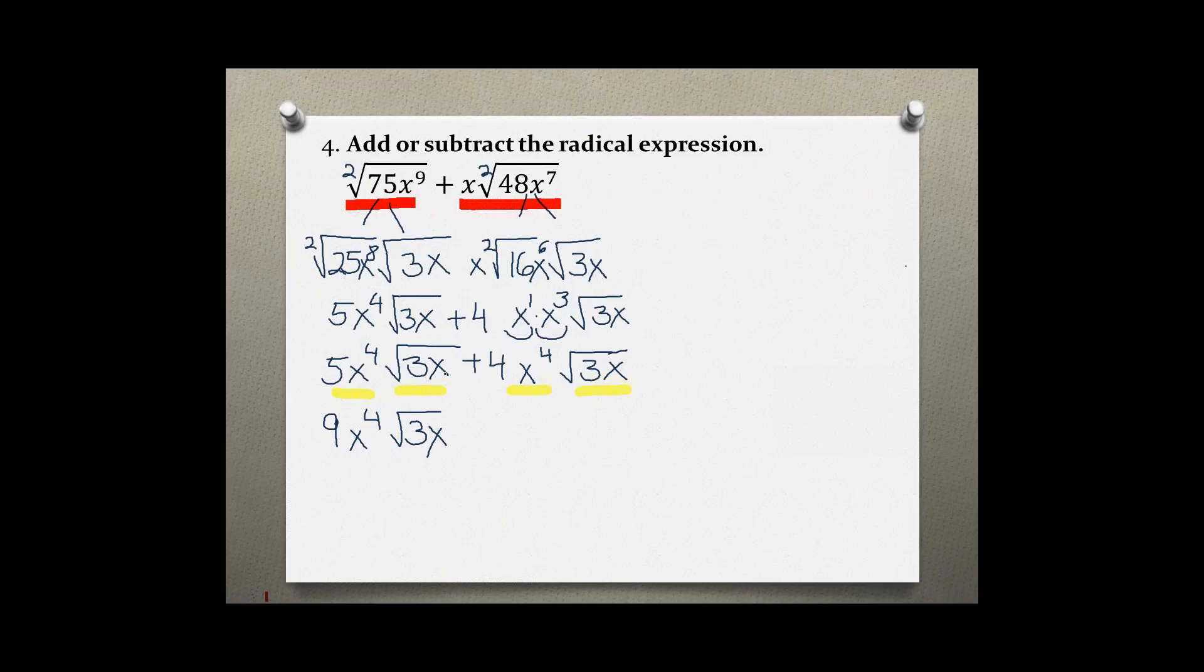Only their coefficients got added together, so 9x to the 4th power times the square root of 3x is the final answer for this problem.